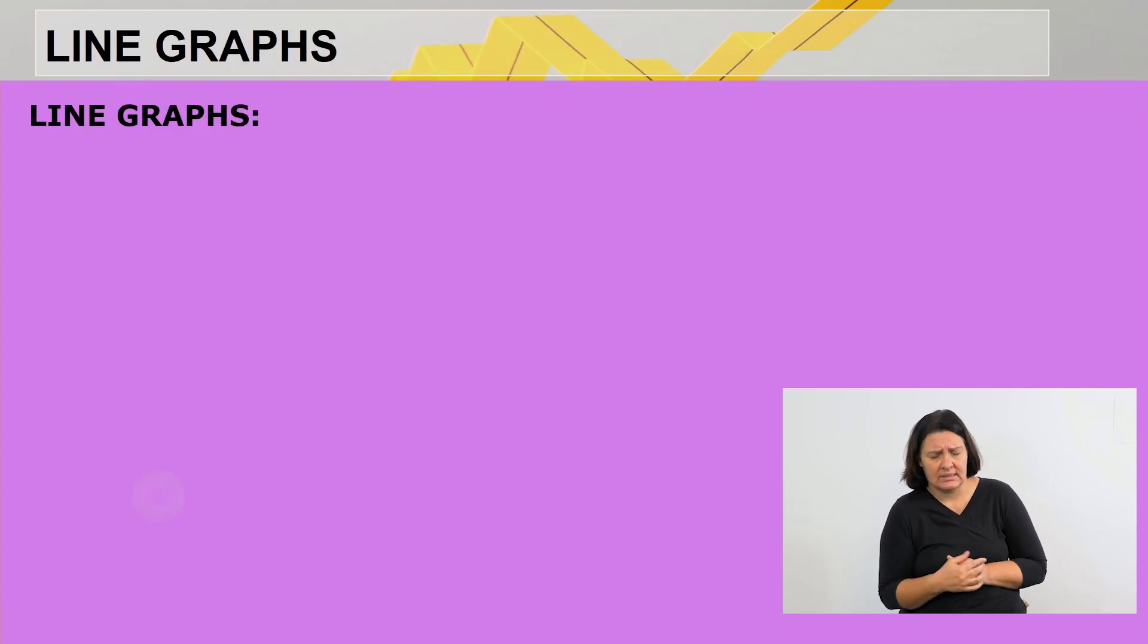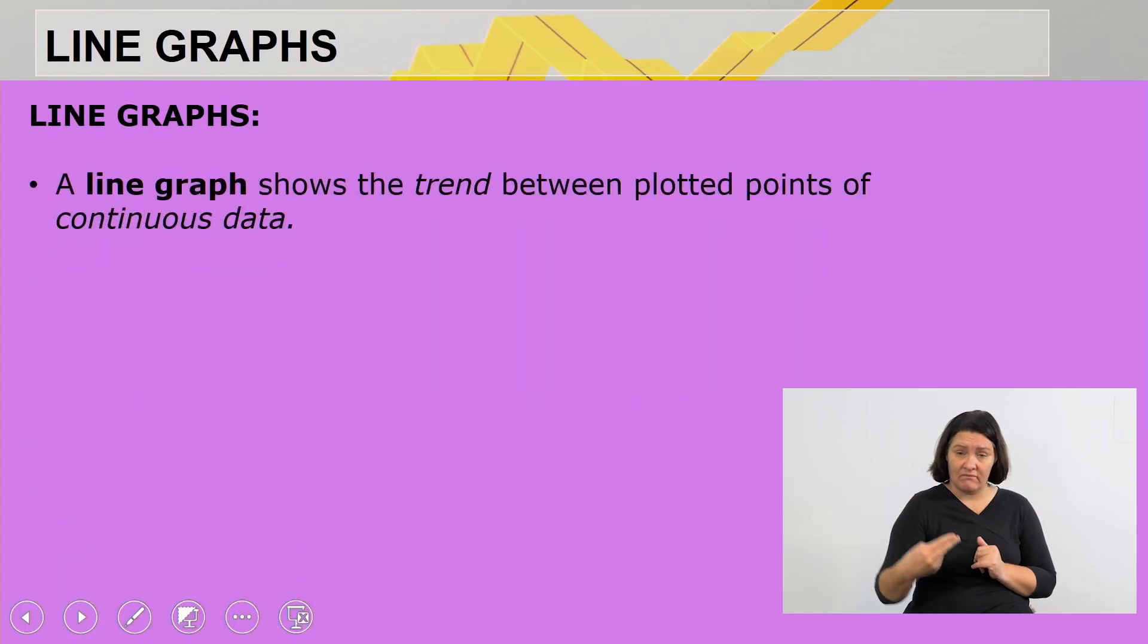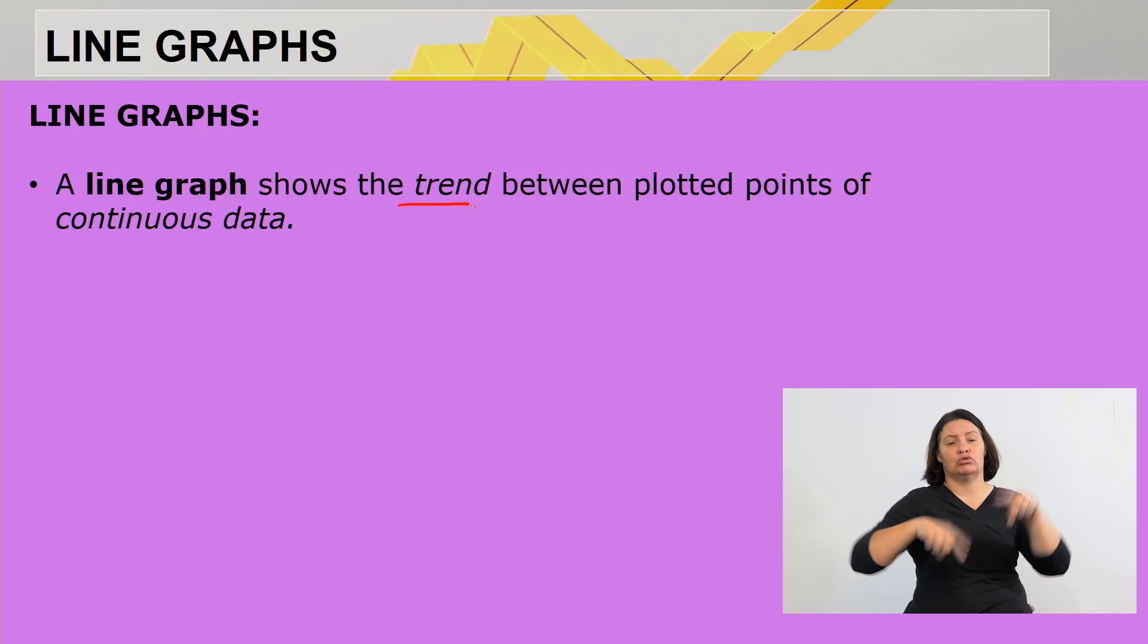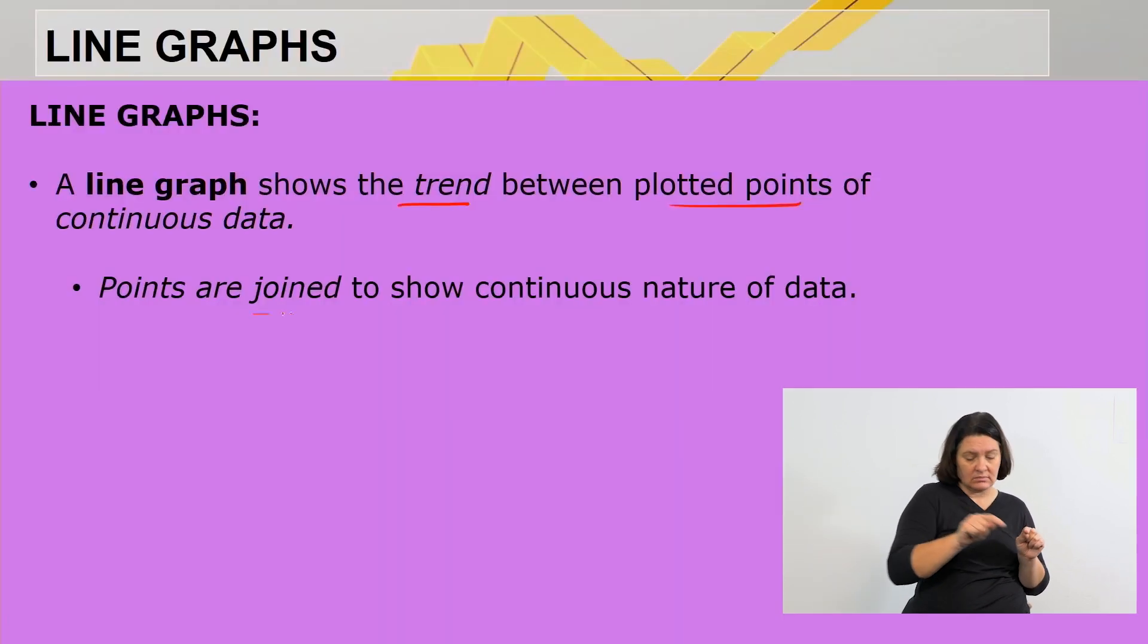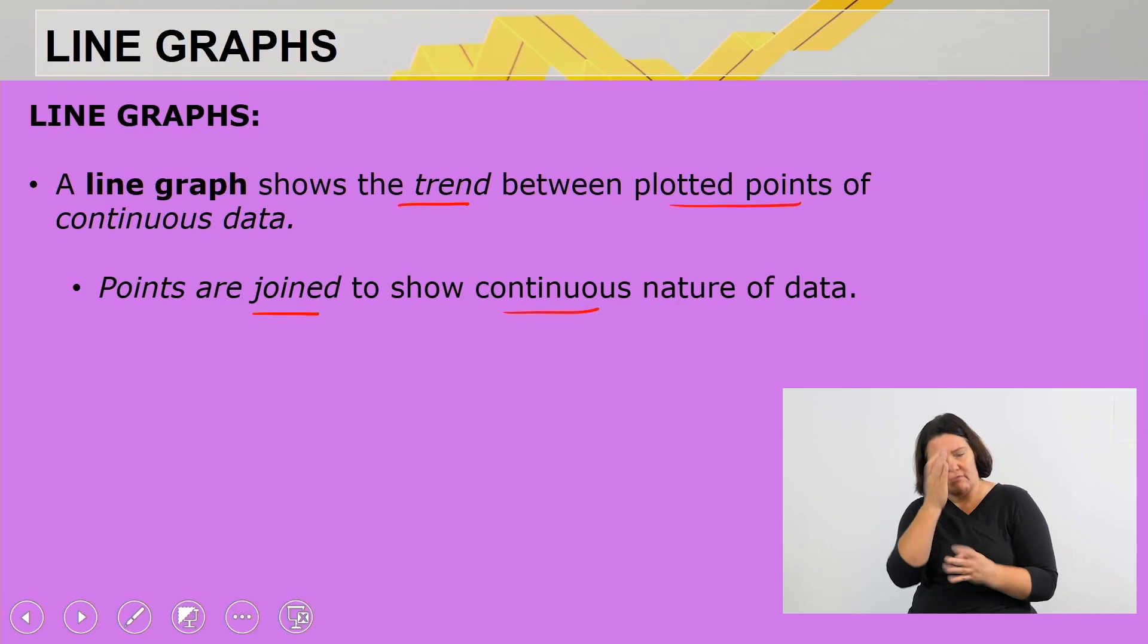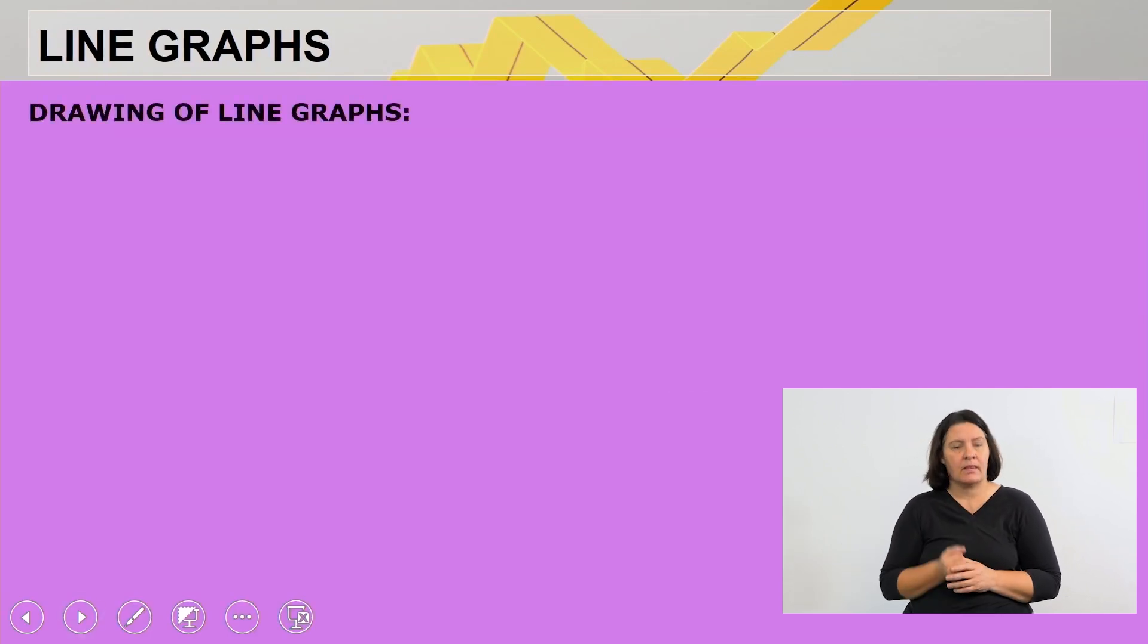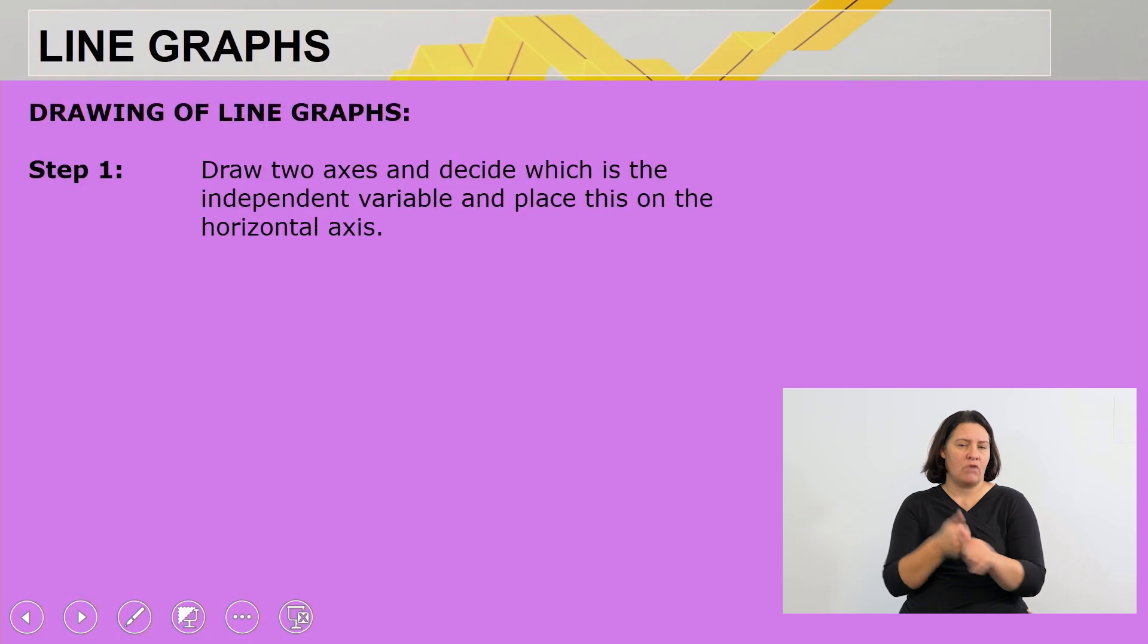What is important when we work with line graphs? A line graph shows the trend between plotted points of continuous data. Points are joined to show the continuous nature of the data. That is line graph.